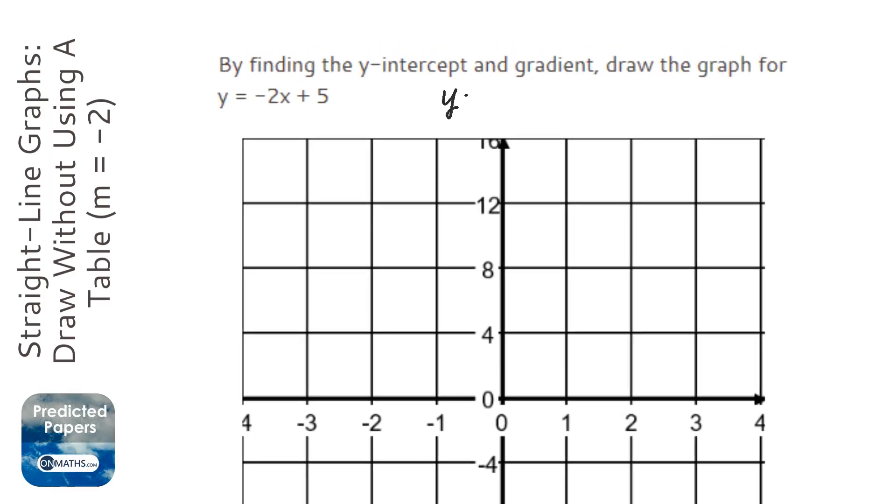So it's really important to remember y equals mx plus c. The plus c is the y-intercept and the m is the gradient. So the gradient is the number before the x, which is minus 2, and the y-intercept is the number at the end, which is 5.